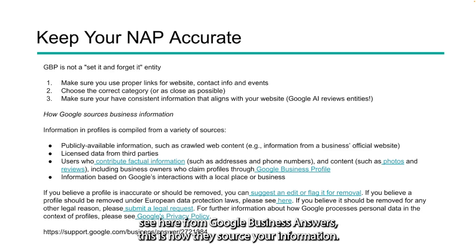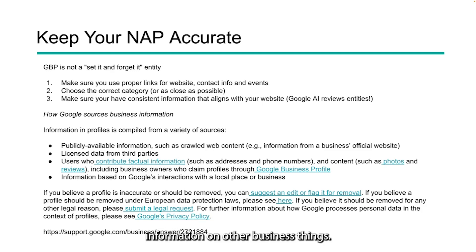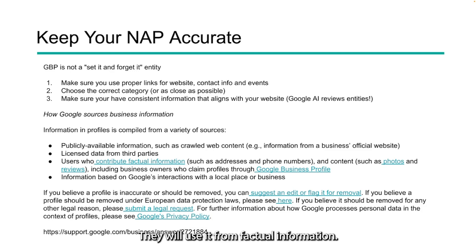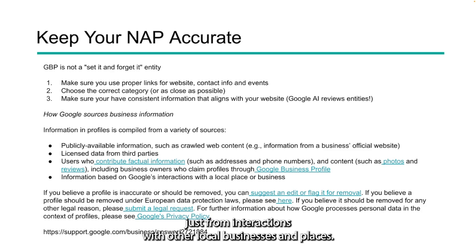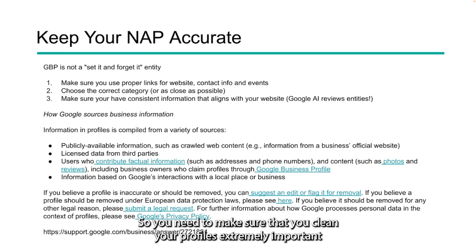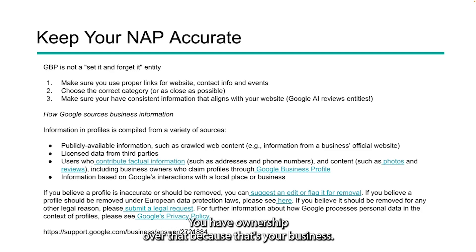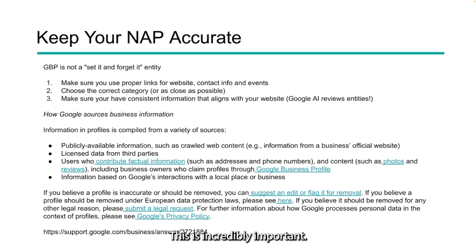As you can see from Google Business Answers, this is how they source your information. They get it from publicly available information like website information and other business listings, licensed data from third parties, other business entities, and directories. They also use factual information like addresses, phone numbers, content from photos, reviews, and things of that nature, and from interactions with other local businesses and places. So if you think your profile is inaccurate and needs to be removed, you can ask them to do that. But if you haven't claimed your profile, you can't make these changes. You need to claim your profile — it's extremely important that you have ownership over it, because that's one of your business's front doors, especially if you're a local business or someone who drives people to a location via Maps.